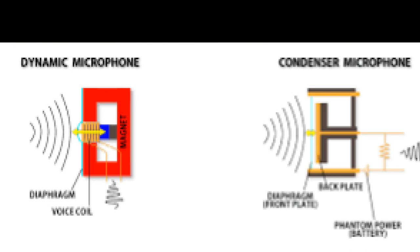That electrical signal is amplified and then maybe modified in some way by your microphone preamp and mixer. Once you have it into your mixer, you can modify it in any way you want. Now there are two main types of microphones, and then several subtypes within those — called condenser and dynamic, because of the way they convert sound to electricity.